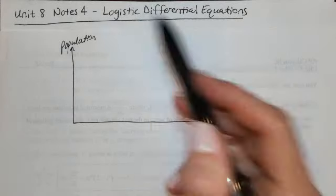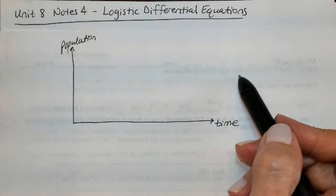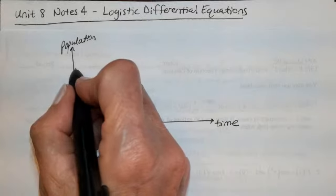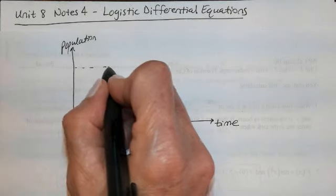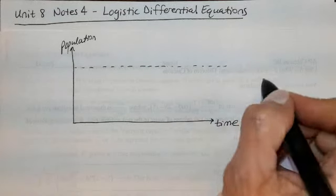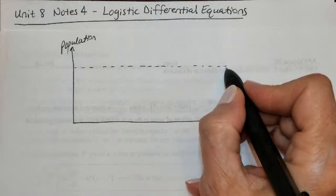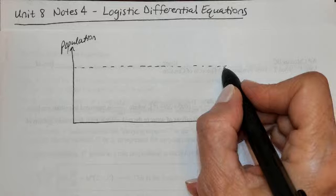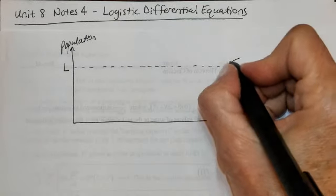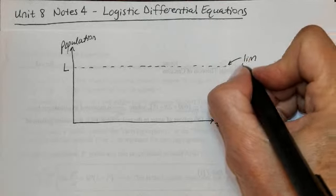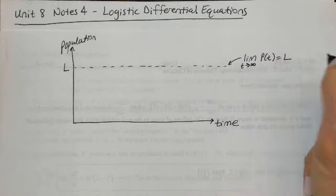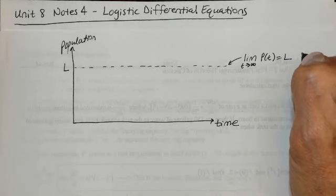In a logistic differential equation, we have a long-term behavior called the carrying capacity, which is a horizontal asymptote. As time goes to infinity, the population will naturally approach that value. I'll call this L for limit — so the limit as time goes to infinity of our population is L.